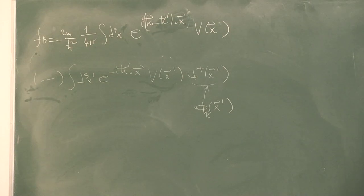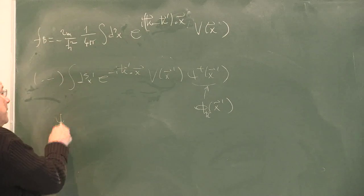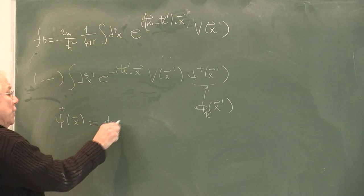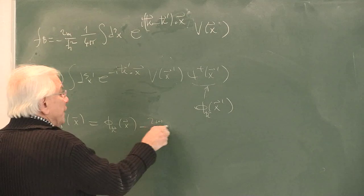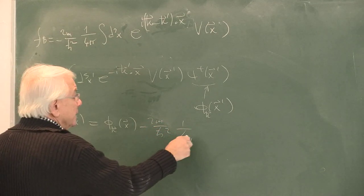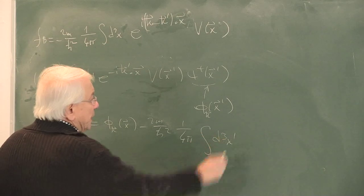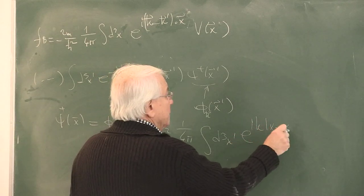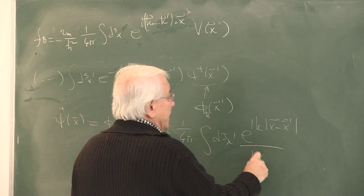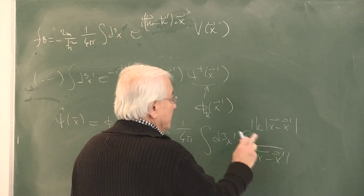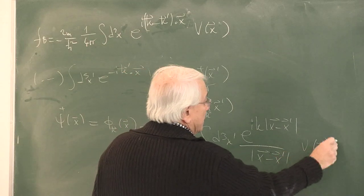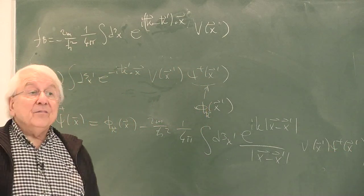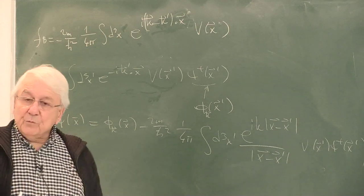What is the equation then? The equation then is: psi_plus of x equals phi_k of x minus (2m over h-bar squared)(1 over 4pi) times the integral d-cubed x-prime, e to the ikx minus x-prime divided by x minus x-prime, times v of x-prime, times psi_plus of x-prime. And you notice that I have gone back to the exact equation before the approximation. Why?